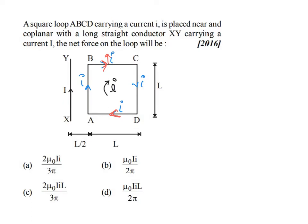The sides BC and AD are perpendicular to the straight conductor, and since their currents are in opposite directions relative to the conductor, the forces on them cancel — F_BC and F_AD are equal and opposite, giving zero net contribution.